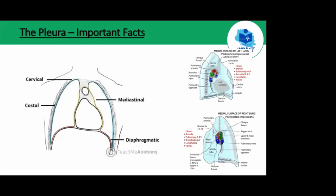Let's talk about the pleura. Its histology consists of a serous membrane of simple squamous cells, supported by connective tissue deep to that. The special layer of squamous cells is known as the mesothelium. Differentiating between visceral versus parietal pleura really comes down to general anatomical locations, blood supply, and relevant neighboring anatomical structures.